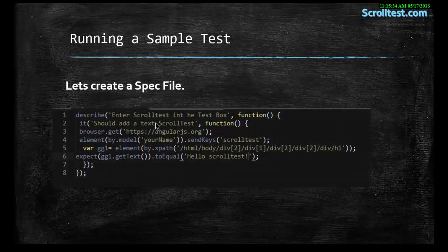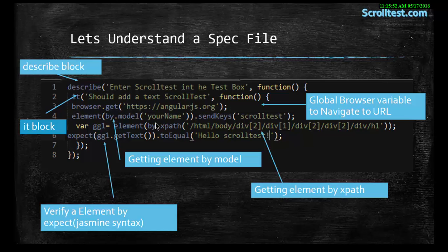The spec file is basically a Jasmine test case. If you have no idea about Jasmine, just follow along — the next tutorial will discuss what exactly Jasmine is. It's a very simple test case where we have a describe block, and inside the describe block we have an 'it' block containing a basic test case where we are expecting certain text to match our actual result. In the global browser variable we are navigating to angularjs.org, passing the key 'test', and in the h1 variable we are getting what is in the h1 tag and expecting it to equal 'hello test'.